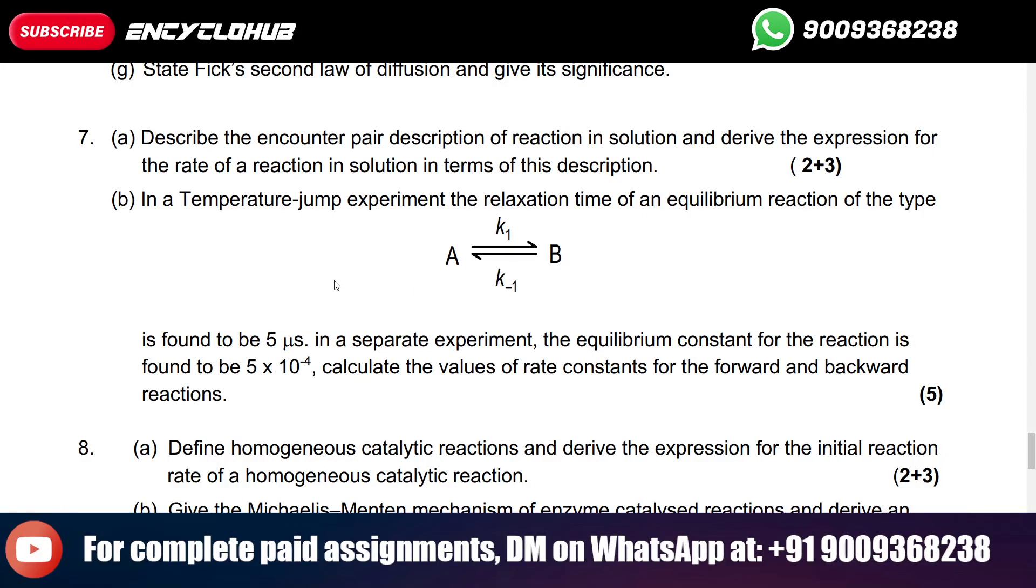Hey guys, today we will see: in a temperature jump experiment, the relaxation time of an equilibrium reaction is found to be 5 μs. In a separate experiment, the equilibrium constant for the reaction is found to be 5 × 10⁻⁴. Calculate the values of rate constants for the forward and backward reactions.